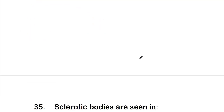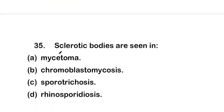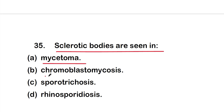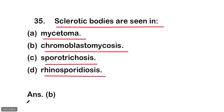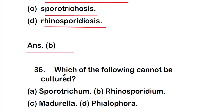Question 35: Sclerotic bodies are seen in option A - mycetoma, option B - chromoblastomycosis, option C - sporotrichosis, or option D - rhinosporidiosis. The right answer is option B, chromoblastomycosis. Sclerotic bodies are seen in chromoblastomycosis.